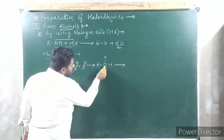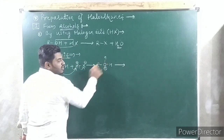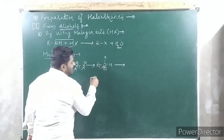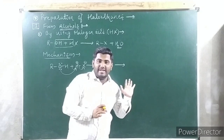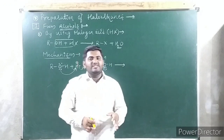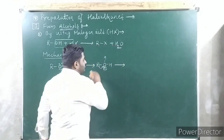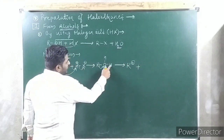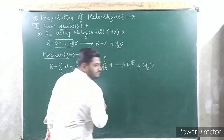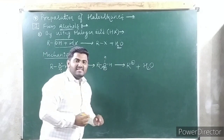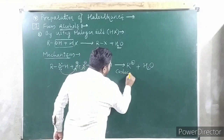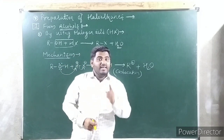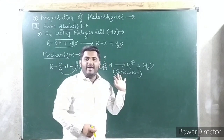Next step: this oxygen is already having three bonds, which is highly unstable. So it will take the electron from the neighboring carbon. R means any alkyl group — it may be CH₃, C₂H₅, C₃H₇, whatever. As a result, R⁺ is formed and H₂O is eliminated. What is R⁺? It is a carbocation.